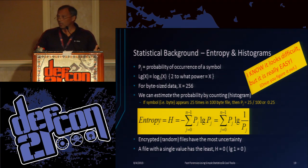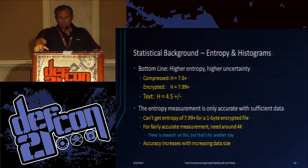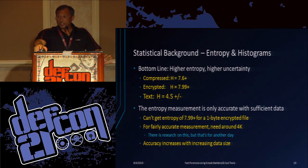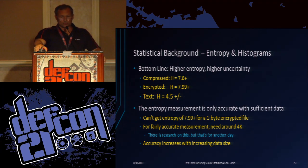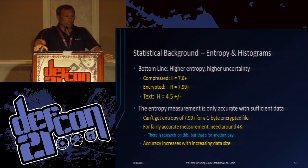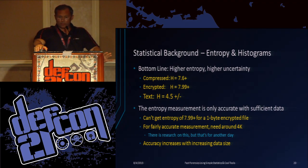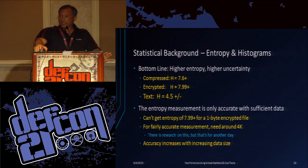The higher the entropy, the more uncertainty — that's what you want in an encrypted file. You don't want the attacker to figure out what you've encrypted or have any kind of information about what symbols are. Compressed removes pattern and once you remove pattern you get a randomized looking file, but it's not as random as an encrypted file. English text I've found to be around 4.3 to 4.6 — it's in a very narrow range, so you can identify that immediately.